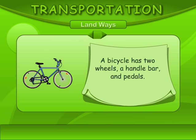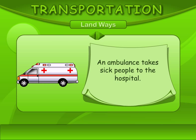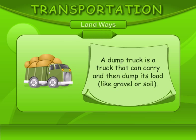A bicycle has two wheels, a handlebar, and pedals. An ambulance takes sick people to the hospital. A dump truck is a truck that can carry and then dump its load, like gravel or soil.